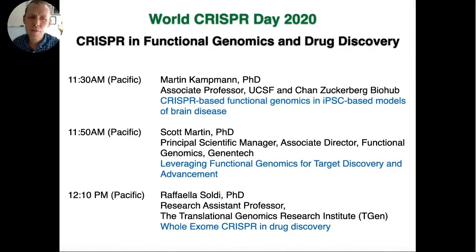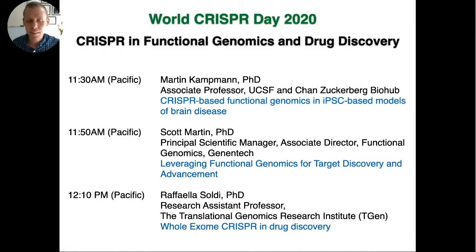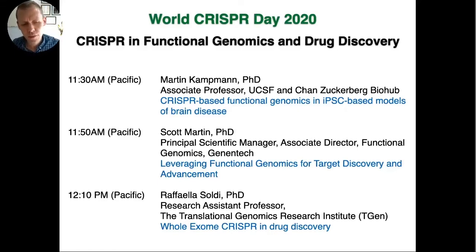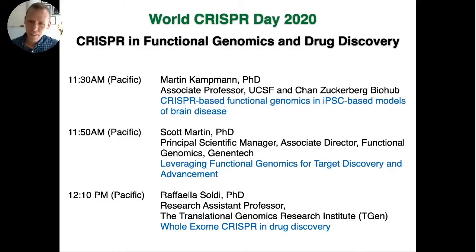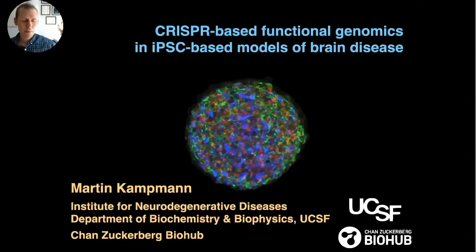In this session, we will cover different aspects of CRISPR technology used in screening formats and functional genomics formats for the purpose of understanding disease and drug discovery. I will give the first talk and focus a bit more on application to brain disease, and I think Scott and Raffaella will have slightly more of a focus on both basic biology but also oncology. My name is Martin Kampmann. I'm an associate professor at UCSF and an investigator at the Chan Zuckerberg Biohub, and the title of my presentation is CRISPR-based functional genomics in iPSC-driven models of brain disease.